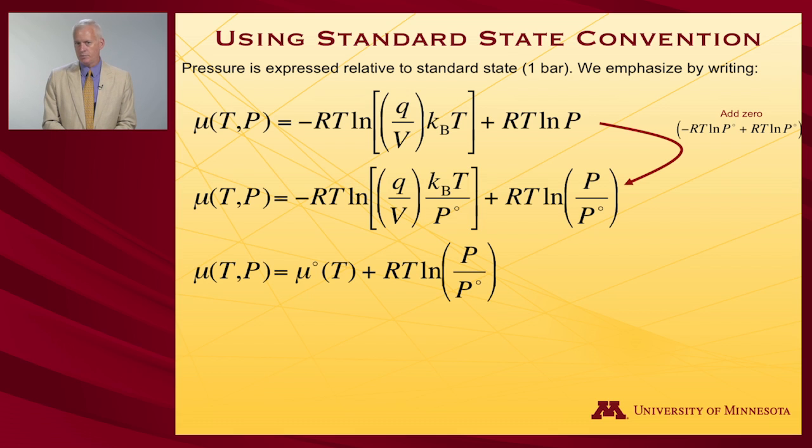And to continue manipulating this a bit to a form that we've seen before, what I want to do is add zero. That is, I'm going to add minus RT log some standard state pressure, one bar, for instance. So minus that plus that. But I'm going to move those two terms into different places. So the minus RT log P0, I'm going to put it in this term. So the P0 appears in the denominator here. The plus RT log P0, I'm going to send that one over here. And since that was originally negative, again, it appears in the denominator here.